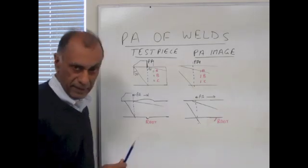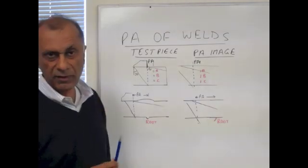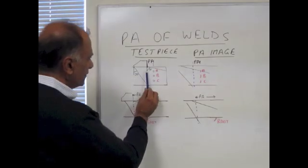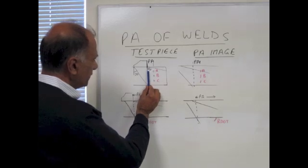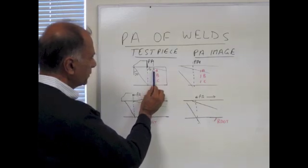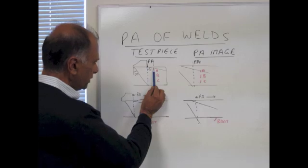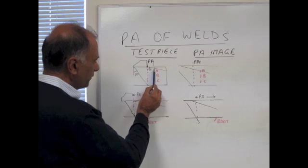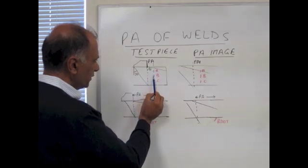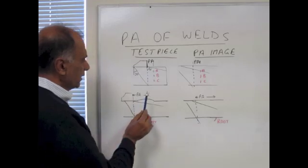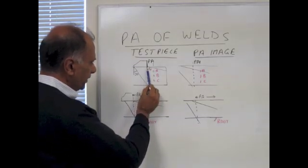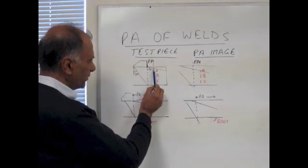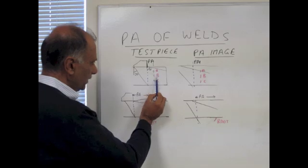There will be two measurements on the phased array screen: PA and DA. PA is the distance from the front of the phased array wedge to the indication, and DA is the depth from the top surface to the depth of the indication. So remember: PA is from the front of the wedge to the indication, and DA is the depth from the top surface to the indication.